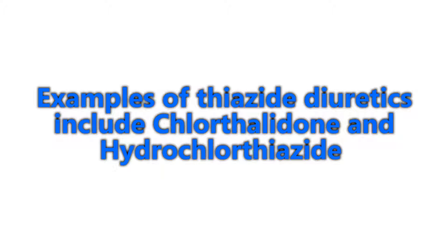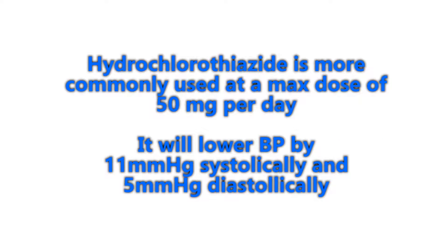Examples of this class are chlorthalidone, which is a thiazide-like diuretic, and hydrochlorothiazide, more commonly used. Hydrochlorothiazide at its maximum dose of 50 milligrams per day will lower systolic blood pressure 11 millimeters of mercury and diastolic blood pressure 5 millimeters of mercury.